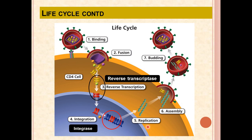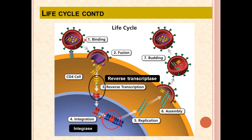The fifth process is replication, where viral RNA and viral proteins are created. After replication, in the sixth step called assembly, the viral RNA and proteins get assembled onto the circumference of the cell. Finally, in the seventh step called budding, the immature HIV virus is pushed out of the cell and converted into a mature virus, which then starts infecting other CD4 cells.